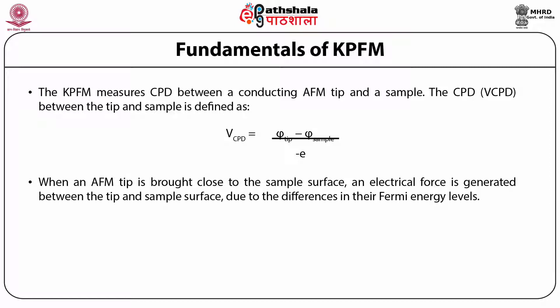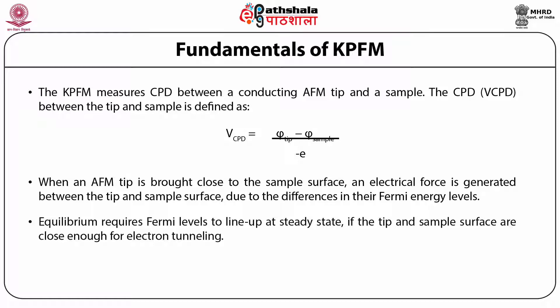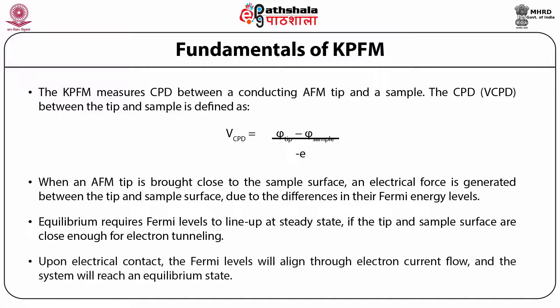The energy levels of the tip and the sample surface are depicted when separated by a certain distance d and not electrically connected — these levels are aligned but Fermi levels are different. Equilibrium requires Fermi levels to line up at steady state if the tip and sample surface are close enough for electron tunneling. Upon electrical contact, the Fermi levels will align through electron current flow and the system will reach an equilibrium state.